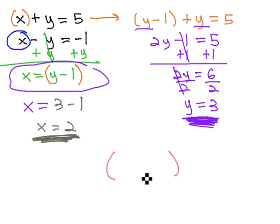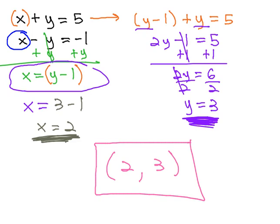We now know where these two equations are going to intersect. x comma y, 2 comma 3 is the pair of numbers that will make both of these equations true.